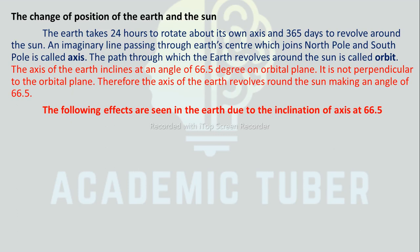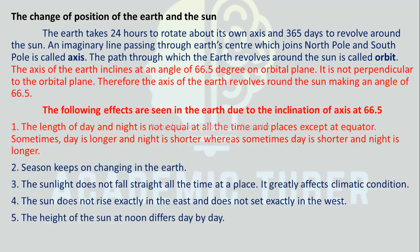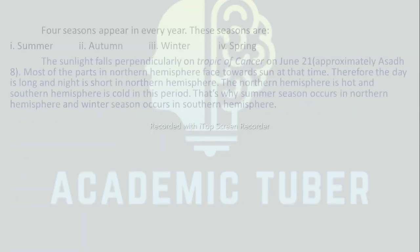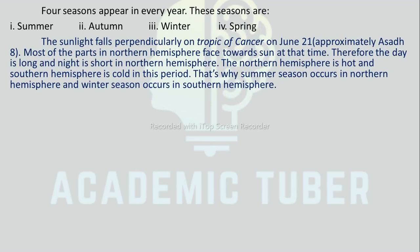The following effects are seen on Earth due to the inclination of the axis at 66.5 degrees: The length of day and night is not equal at all times and places except at the equator — sometimes day is longer and night is shorter, and sometimes day is shorter and night is longer. Seasons keep on changing on Earth. Sunlight does not fall at the same angle at a place all the time, greatly affecting the climatic conditions. The Sun does not rise exactly in the east nor set exactly in the west, and the height of the Sun at noon differs day by day.